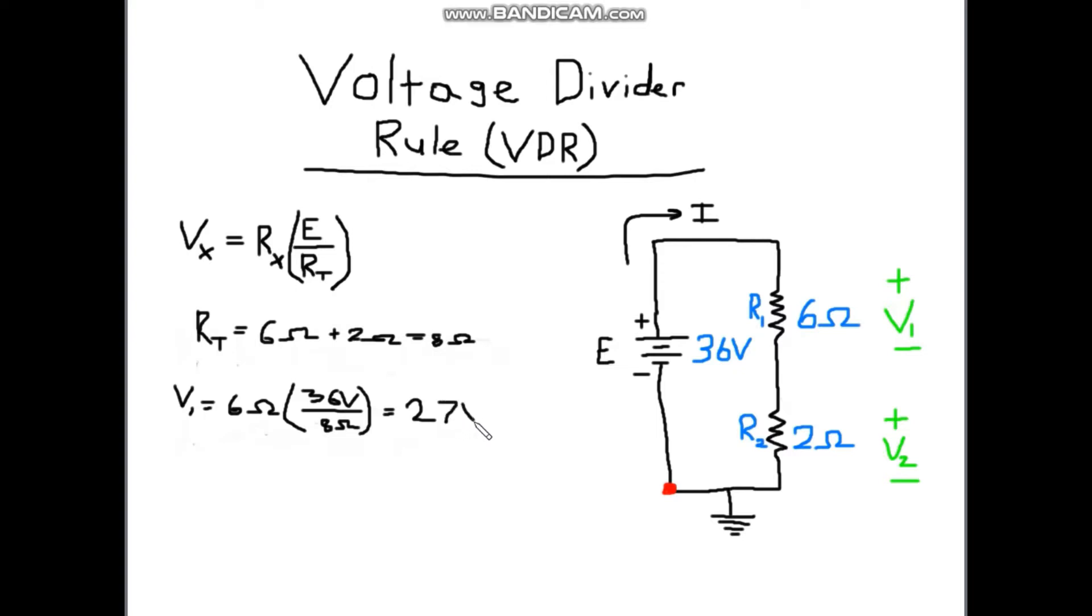So what that's telling us is that the voltage drop as the current travels through this resistor, the difference in potential energy across the two terminals of this resistor, the voltage drop is 27 volts.